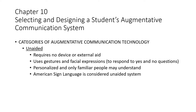American Sign Language is considered an unaided system. Just in case you didn't realize this, American Sign Language is not the same as sign language in Mexico, France, or China. Each culture has their own specific sign language. You might think it would be better if it were universal, but symbols and gestures that represent something in one culture may not apply to another, so overall they are actually different languages.